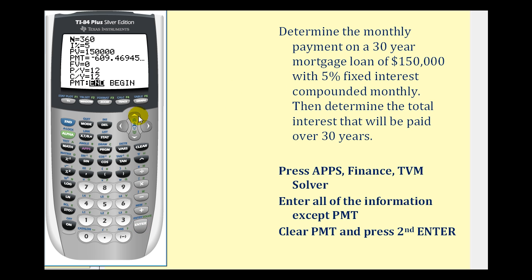Now all we have to do is go back up to the payment cell. We're going to clear this amount, and then press Alpha, Enter. And it will tell us the required monthly payment. Notice that it's negative because we'll be paying that amount. So the payment would be $805.23 per month.